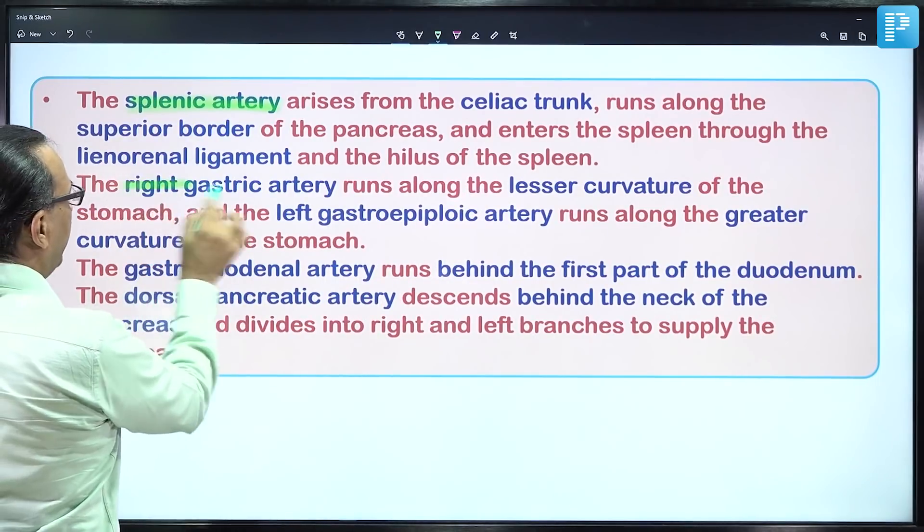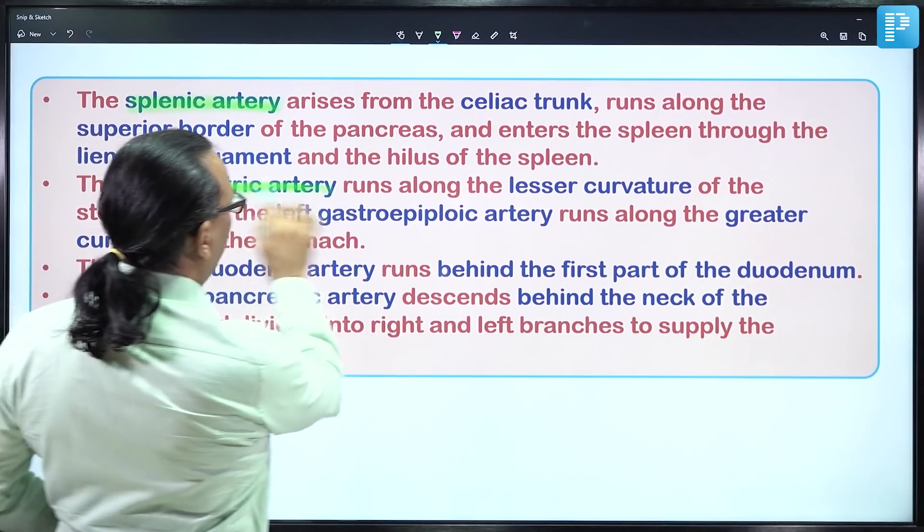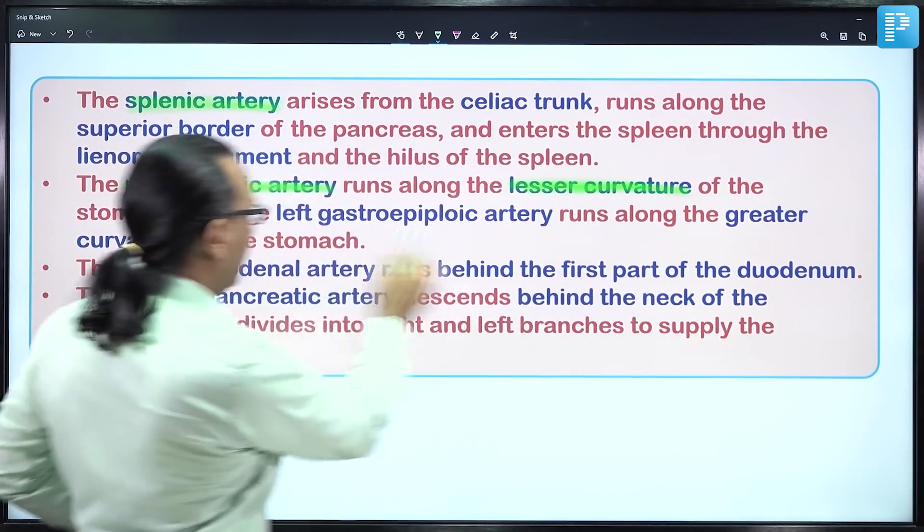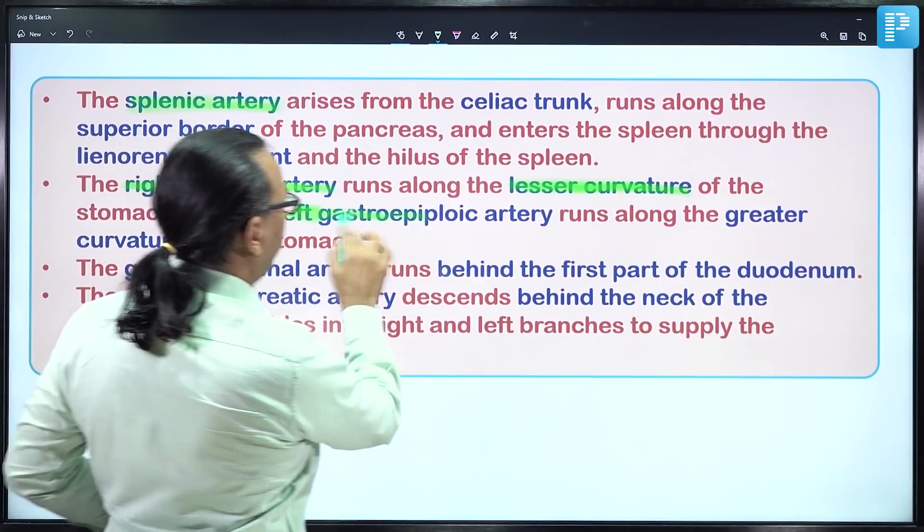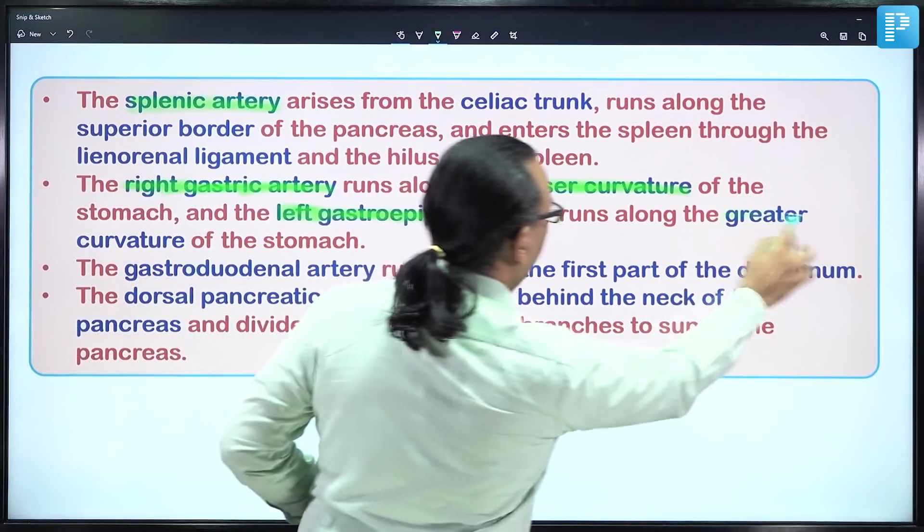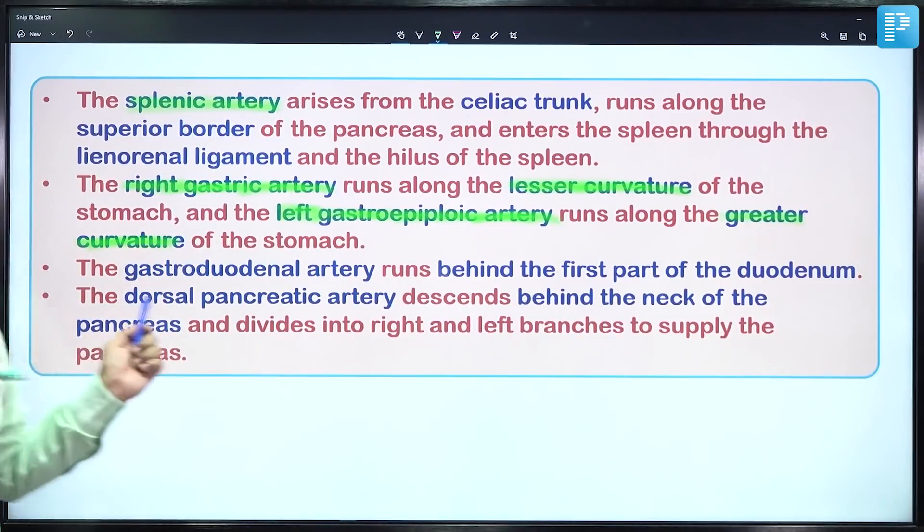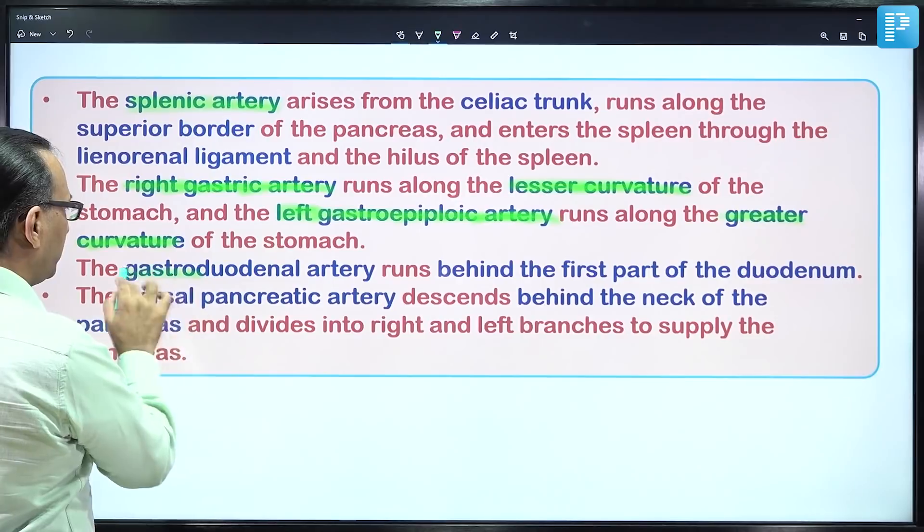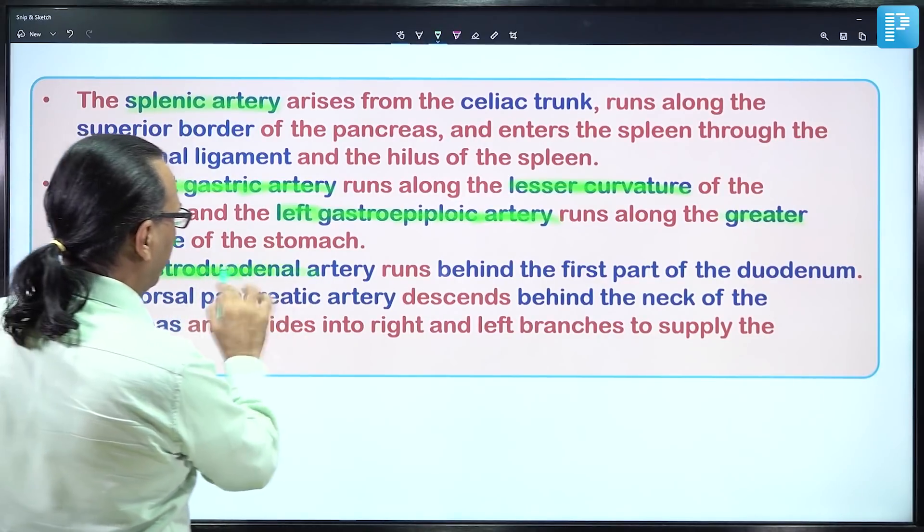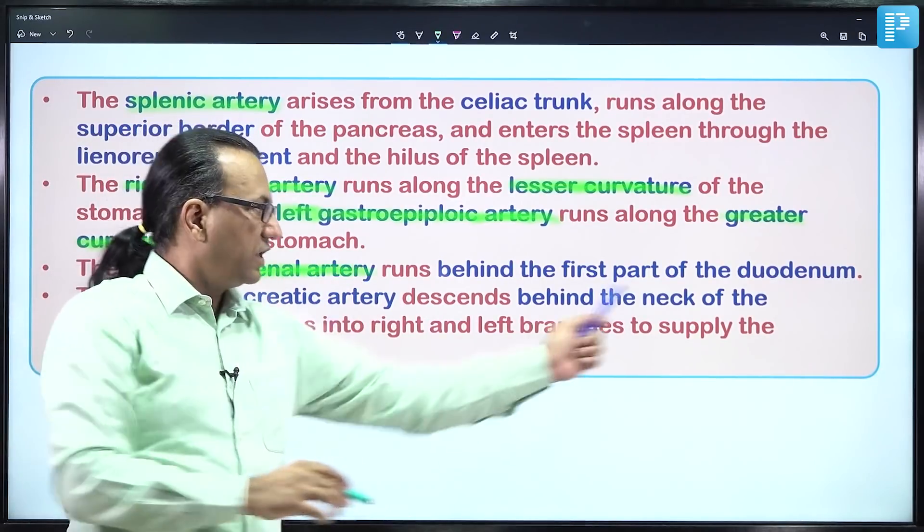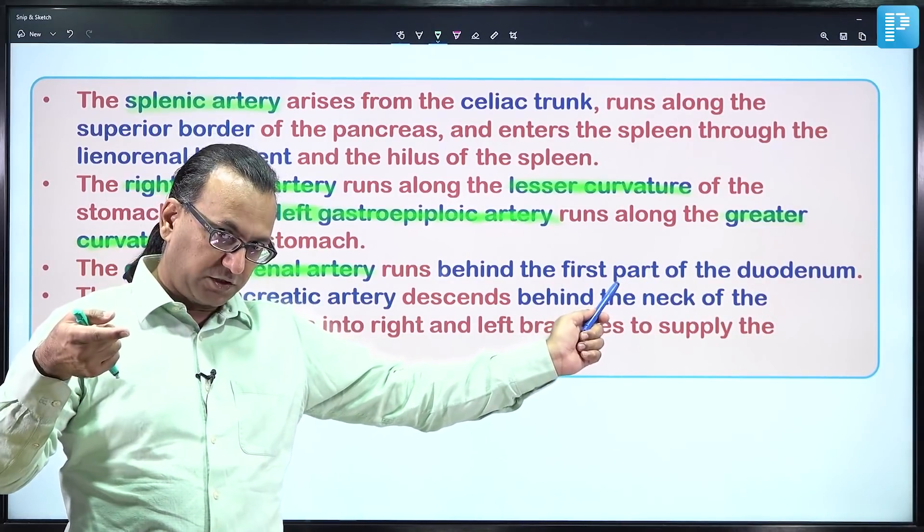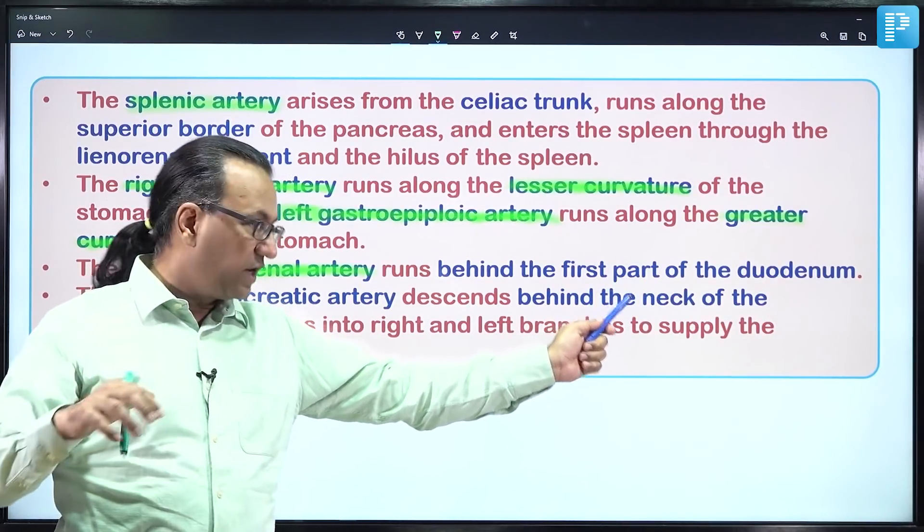The right gastric artery runs along the lesser curvature of the stomach. The left gastroepiploic artery runs along the greater curvature. The gastroduodenal artery runs behind the first part of the duodenum and is prone to bleeding with posterior perforation of duodenal ulcers, though anterior perforations are more common than posterior ones.